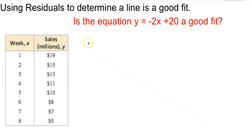We have some data here — weeks and sales in millions. There's an equation of a line, y equals negative 2x plus 20, and the question is whether this line is a good fit for the model.